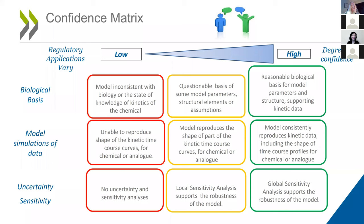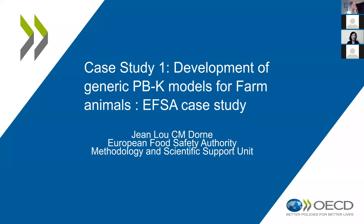The confidence matrix is another tool provided in the guidance to prompt the risk assessment community to think about how they are judging relative confidence in a model for regulatory application. This will vary considerably — from priority setting, where low confidence may be sufficient, to full quantitative hazard risk characterization, where a very high degree of confidence is needed. The elements to consider include the biological basis of the model, whether you have data or model simulations for an analog, and especially uncertainty and sensitivity — what is your confidence in the critical parameters driving the output of the model. I'll now pass it along to Jean-Louis Dorne, who will present the first case study.